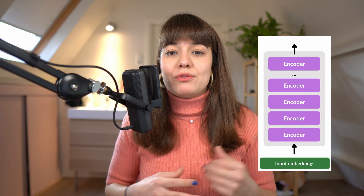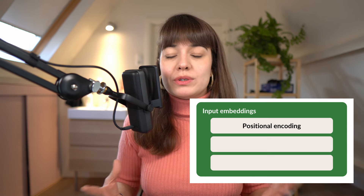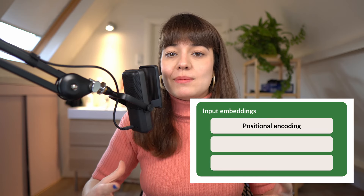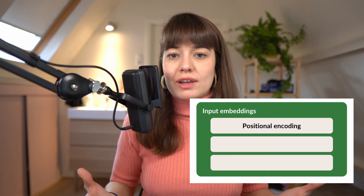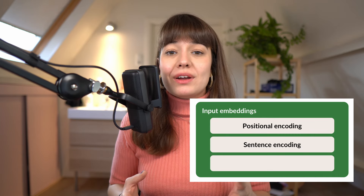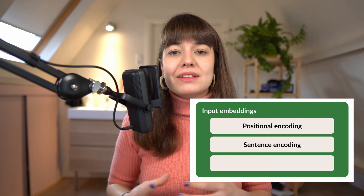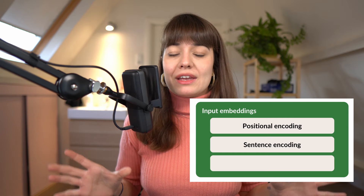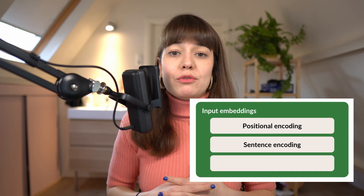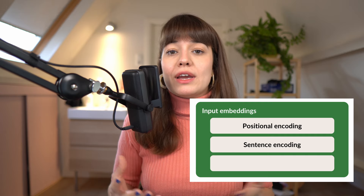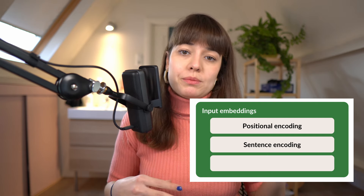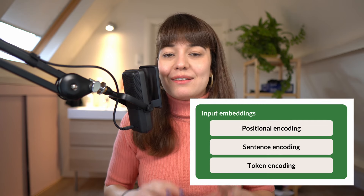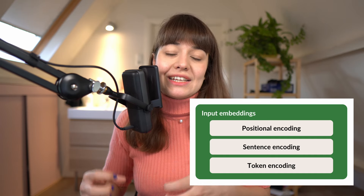For the input layer, we have three different types of information being embedded. The first is positional encoding — since all input words in a sentence are given to the transformer at the same time, positional encodings pass the location information of each word. The second is segment or sentence embeddings, which distinguish what belongs to the first sentence versus the second — useful for tasks like question answering or next sentence prediction where you give more than one sentence. And lastly, token embeddings are the numerical representation of each individual word.